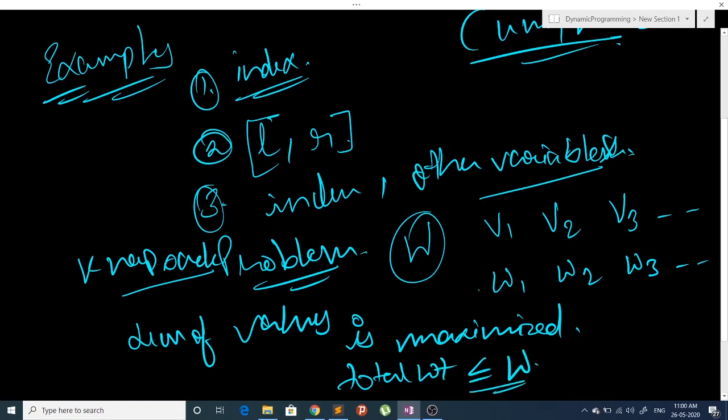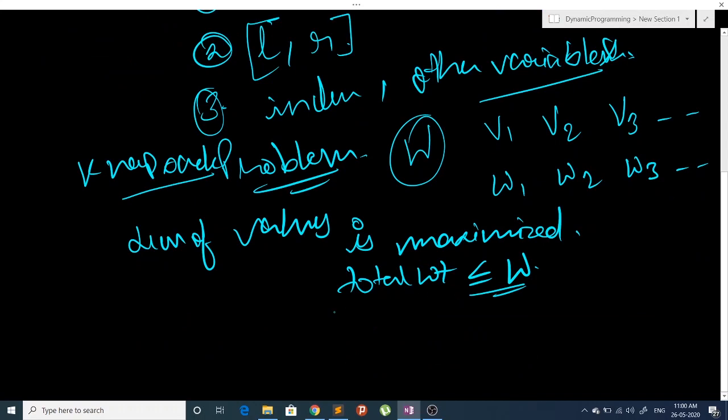So this is our problem. Now how do we define state for this problem? First of all, let's guess that one of the dimensions of our state will be index of the object. Now we have to check if this gives us unique answer or not.